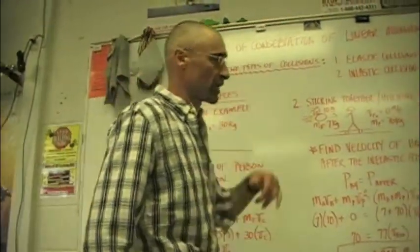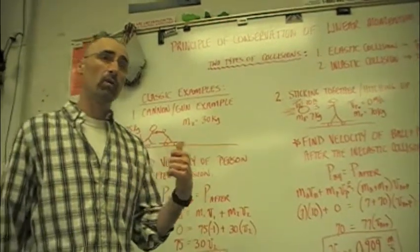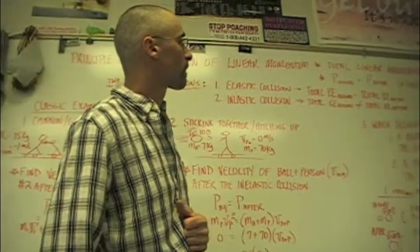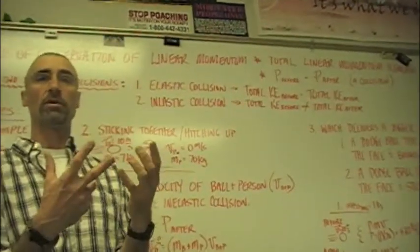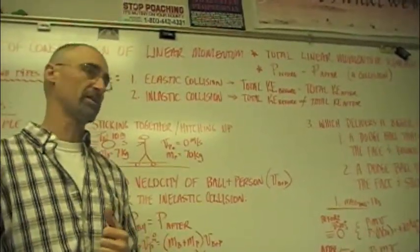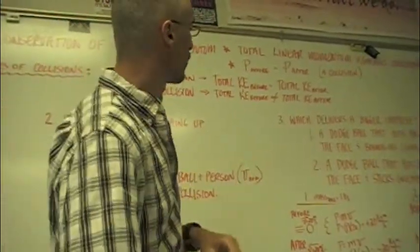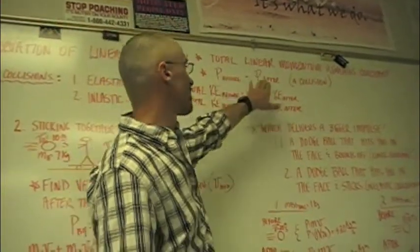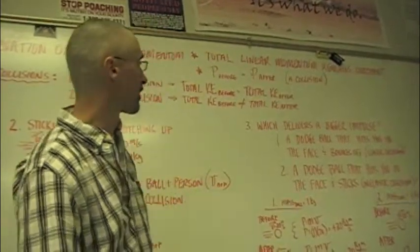What is the principle of conservation of linear momentum? It ties in similarly to the work and energy piece where we had the conservation of energy. Basically, what it says is total linear momentum remains constant within a system if you don't have any outside forces acting on it. So how do we say that in a way kids really understand? The momentum before a collision is equal to the momentum after a collision.